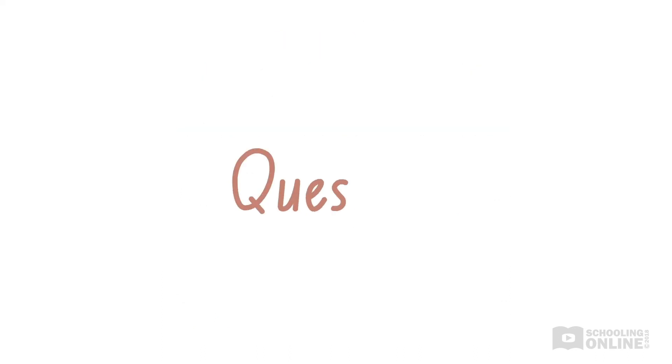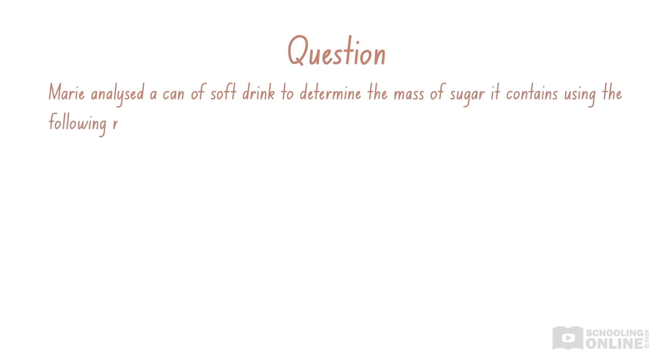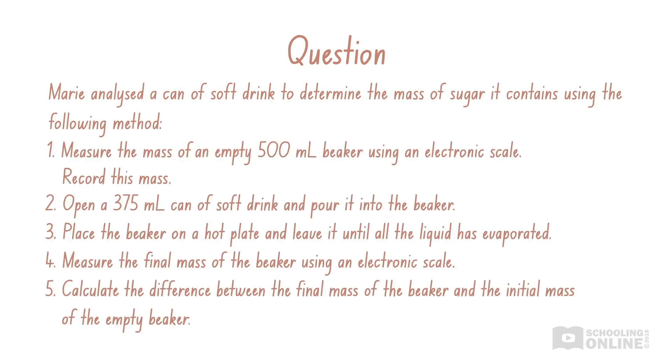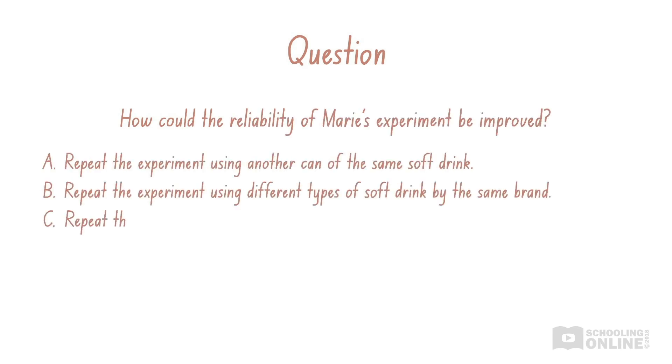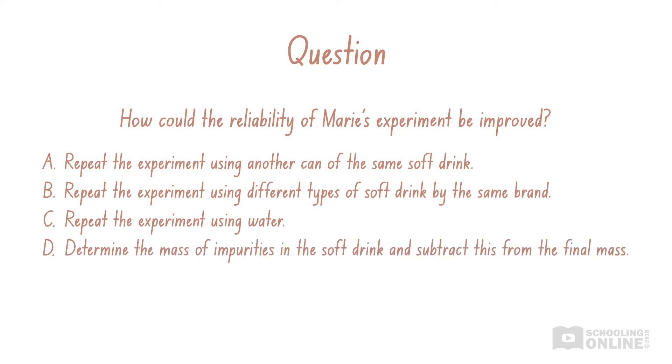Before we finish the video, let's look at a sample question. Marie analysed a can of soft drink to determine the mass of sugar it contains using the following method. Pause here to read the method for yourself. How could the reliability of Marie's experiment be improved? Pause here to think about your answer.